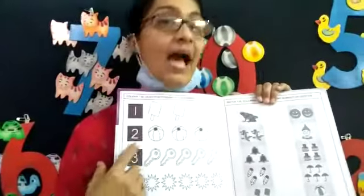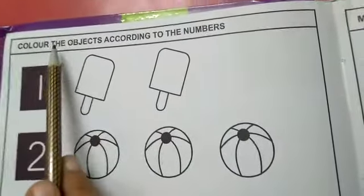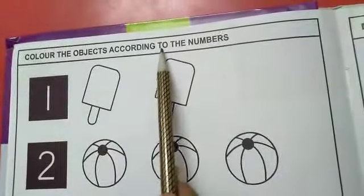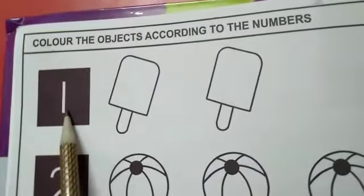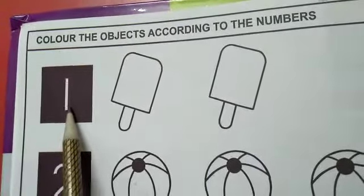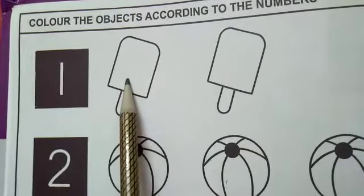Okay ma'am. I will explain to you. Okay ma'am. Color the objects according to the numbers. Which number is this? One. So one candy you may color. Okay ma'am.